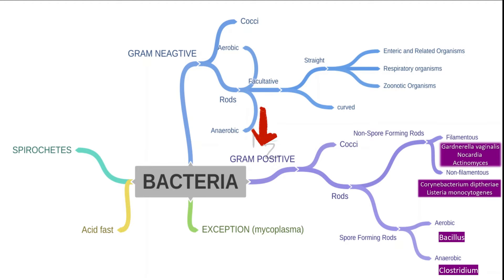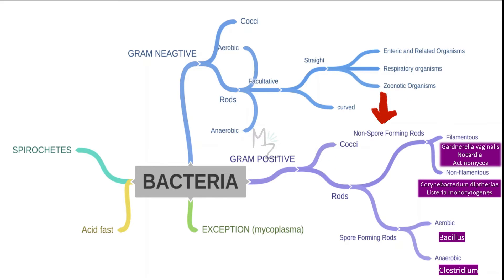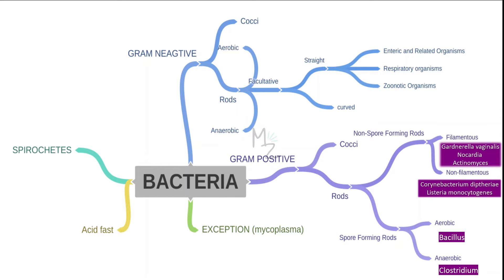Gram-positive bacteria are further classified into cocci and rods. Rods are further subdivided into non-spore-forming and spore-forming. Non-spore-forming are further subdivided into filamentous — for example, Gardnerella vaginalis, Nocardia, and Actinomyces; we are discussing Gardnerella vaginalis today — and also into non-filamentous, for example, Corynebacterium diphtheriae and Listeria monocytogenes. I do have videos on these two, be sure to check them out.